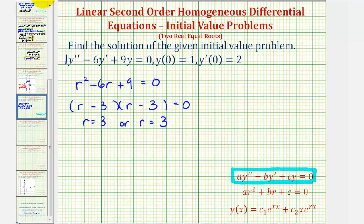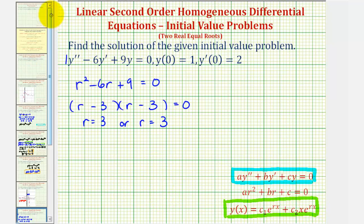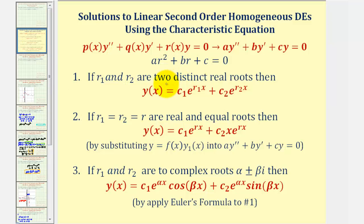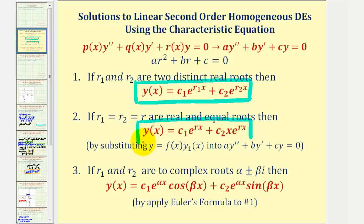Because we have two real equal roots to the characteristic equation, this will be the form of the general solution. For a quick review: if the characteristic equation had two distinct real roots, this would be the form of the general solution. But in our case, since we have two equal real roots, this is the form of the general solution — notice how the second term has an extra factor of x. And if we had complex roots, this would be the form of the general solution.